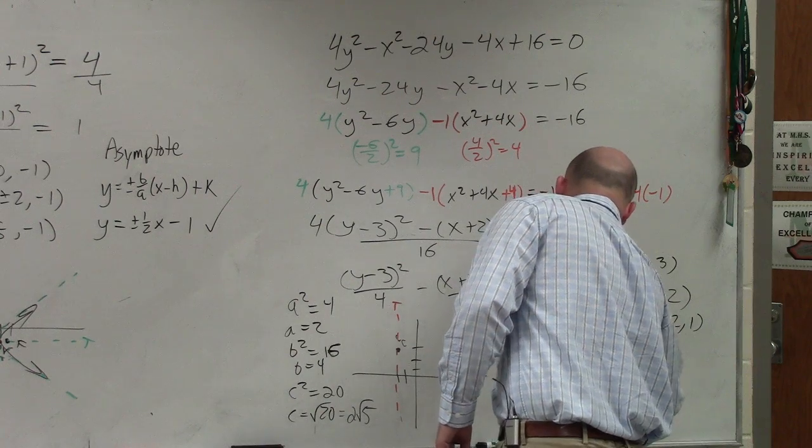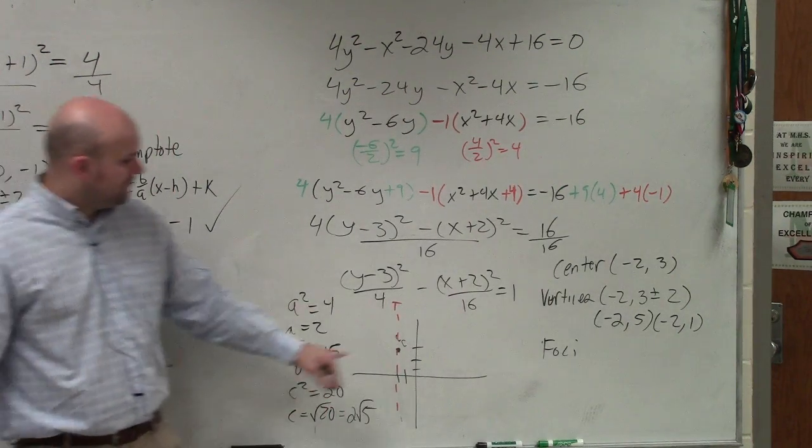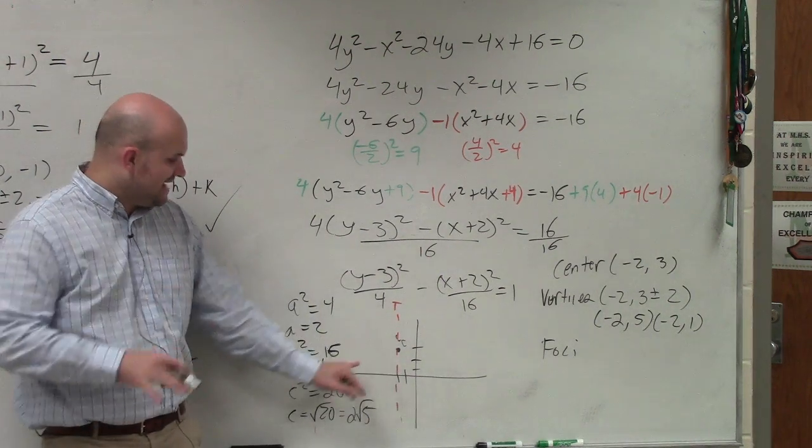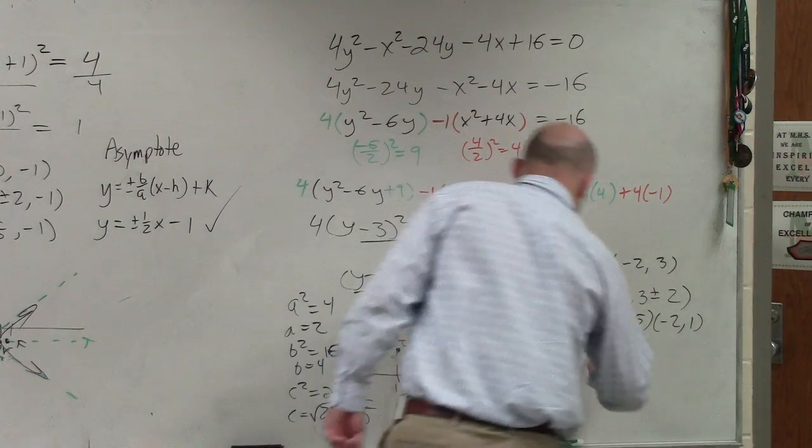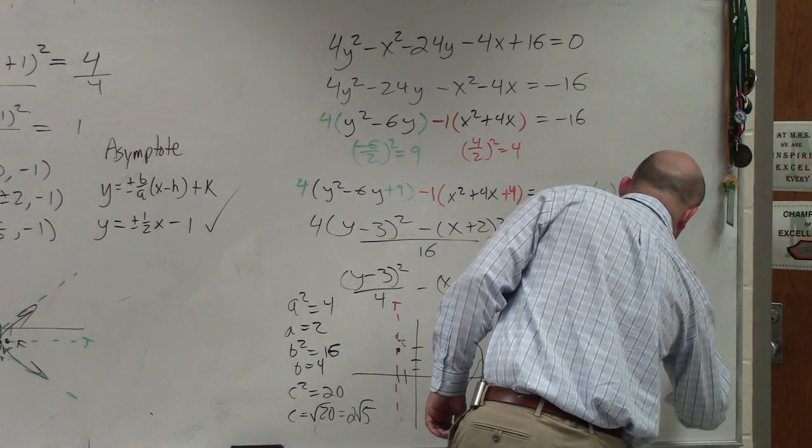My foci is going to be ± c. So therefore from (-2, 3) you're going up and down 2√5. So that's going to be (-2, 3 ± 2√5).